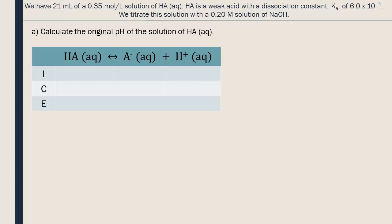We insert the concentration of HA that was given to us in the question. Initially, the solution does not contain any dissociated ions. The acid HA will dissociate a certain quantity of moles, which we will denote with the variable x. Since all the coefficients in the equation are ones, both products will gain the same amount of moles that the HA will lose. So at equilibrium, the reactant will have 0.35 minus x, and the products will have a concentration of x.